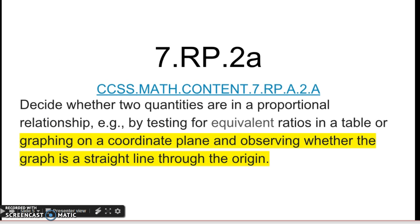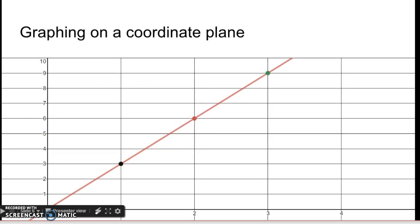The second half of the standard says graphing on a coordinate plane and observing whether the graph is a straight line through the origin. This is really as simple as it sounds. So if I graph something, does it go through the origin? You look down at the bottom, it's hidden right now.